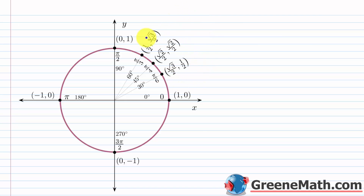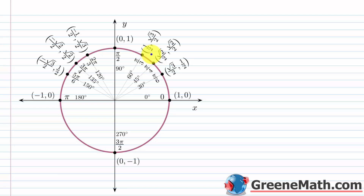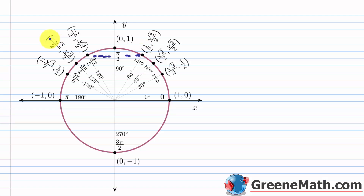Now that we have all the quadrant one points, reflect across the y-axis to get the quadrant two points. When reflecting across the y-axis, the y-coordinate stays the same, but the x-coordinate becomes its opposite — x values are negative on the left side. So (1/2, square root of 3 over 2) becomes (-1/2, square root of 3 over 2), square root of 2 over 2 becomes negative square root of 2 over 2, and square root of 3 over 2 becomes negative square root of 3 over 2.